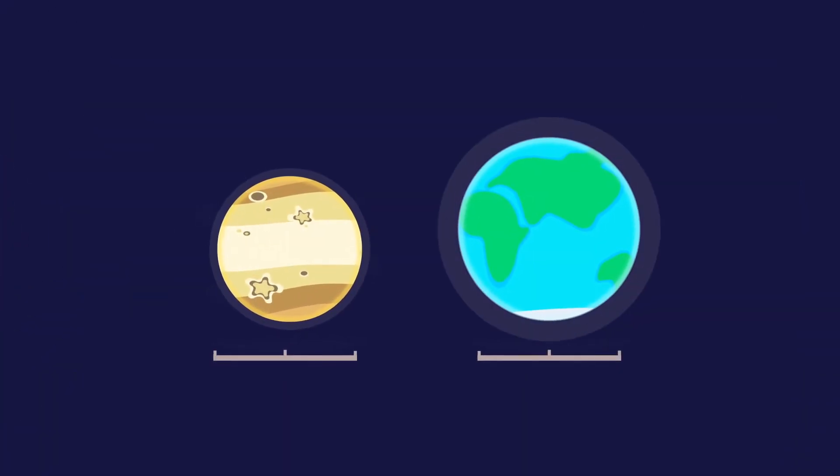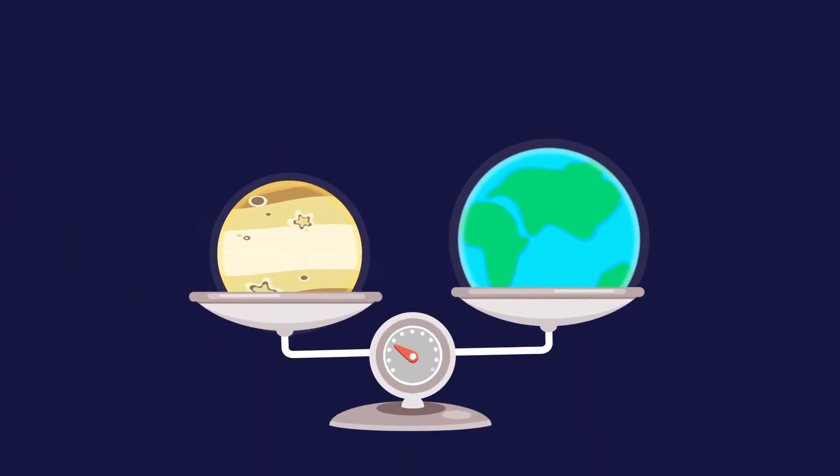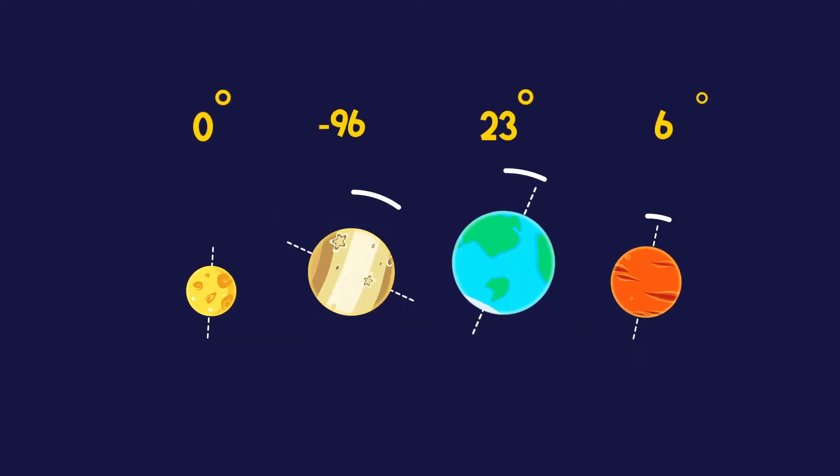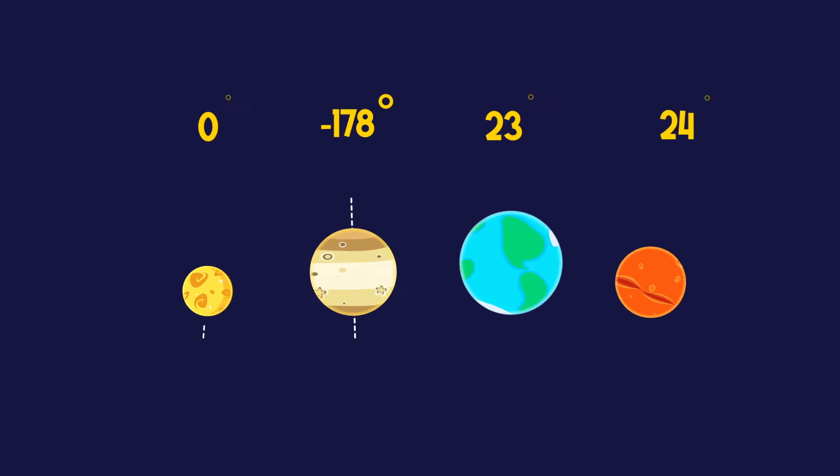It too has an atmosphere and it is roughly the same size and weight, but unlike other planets, Venus rotates in the opposite direction and very slowly.